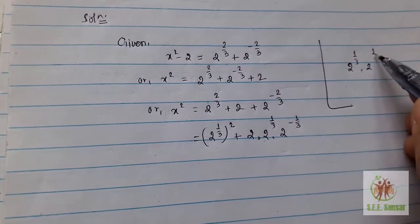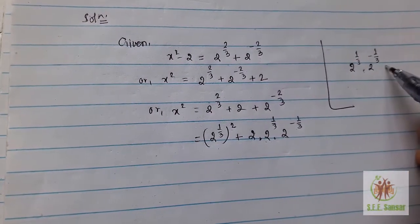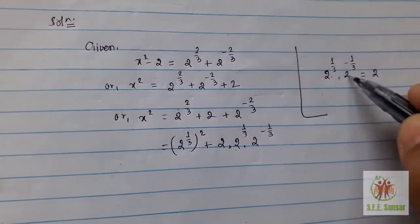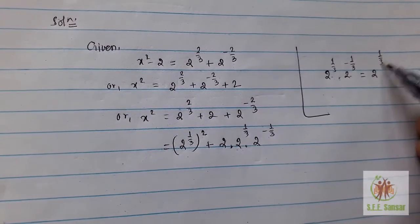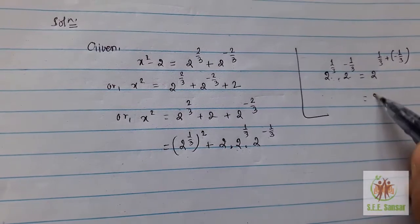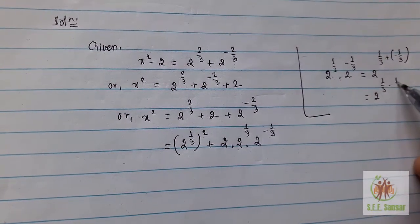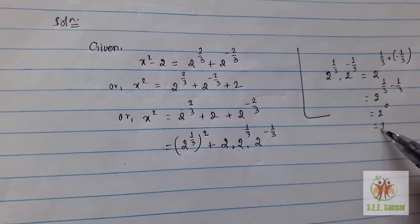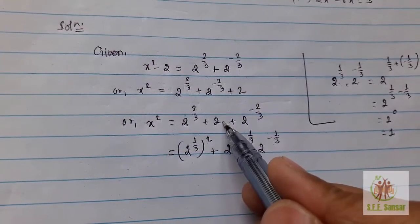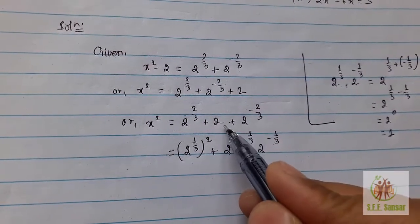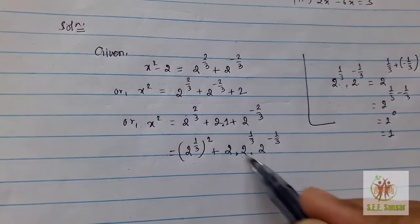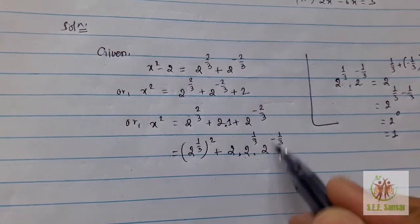During multiplication, when they are being multiplied, the bases are the same and the powers should be added. 2^(1/3) and 2^(-1/3), this becomes 2^0 = 1. So instead of 1, we can write 2^(1/3) × 2^(-1/3).